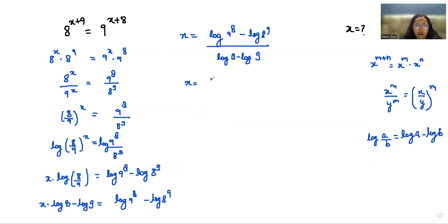So 8 log 9 minus 9 log 8 by log 8, which I can write as log 2 power 3, and log 9 as log 3 power 2.